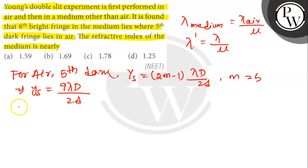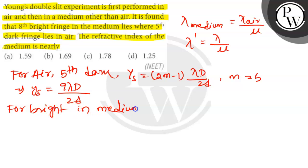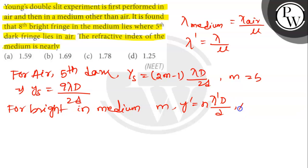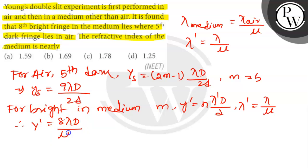For the bright fringe in the medium, y_dash = n * lambda_dash * D / d. Here, lambda_dash = lambda / mu. So y_dash = 8 * lambda * D / (mu * d).